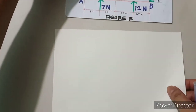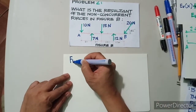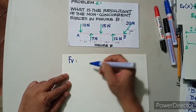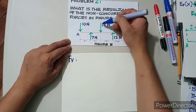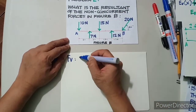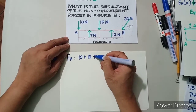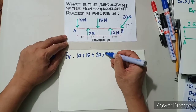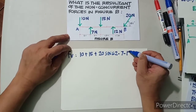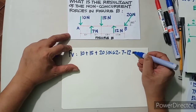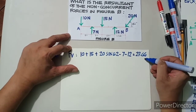So if we're going to get the resultant of all those forces, the vertical force will be equivalent to — assuming downward is positive — we have 10 plus 15 plus 20 sine 62 minus 7 minus 12, and you have a result of 23.66. So it is going down.